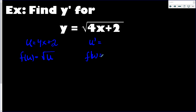When you have a root, it's always better to write it as its exponent equivalent. A square root is equivalent to an exponent of one half. The derivative of the linear function is straightforward — anytime you have a linear term like 4x, the derivative is just the coefficient. So u prime equals 4, and the derivative of the constant is zero.